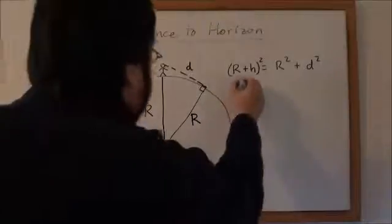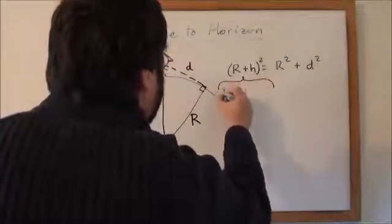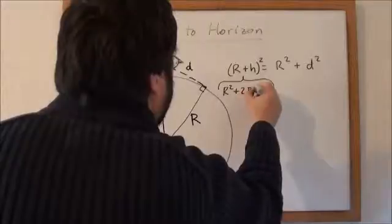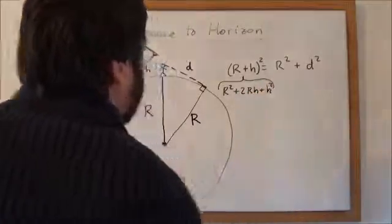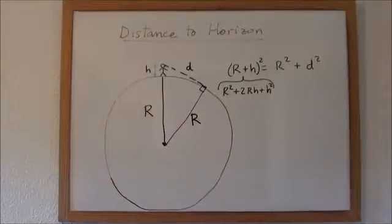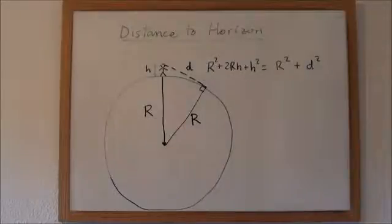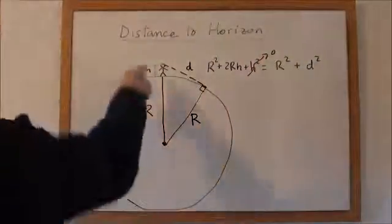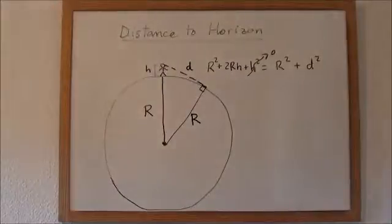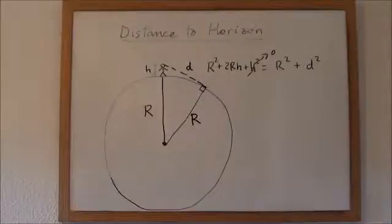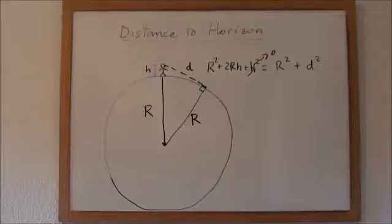Now, let's expand this term. This is R squared plus 2Rh plus h squared. Now, in normal circumstances, h squared is negligible, because h is a very small amount compared to R. Our height is a very small number compared to the radius of the earth. So h squared is even smaller. We can make it zero. It is a very close approximation.